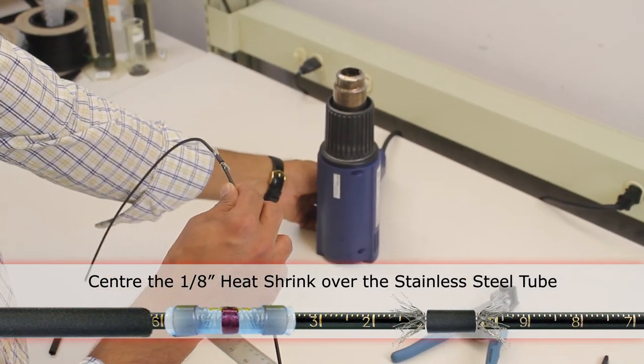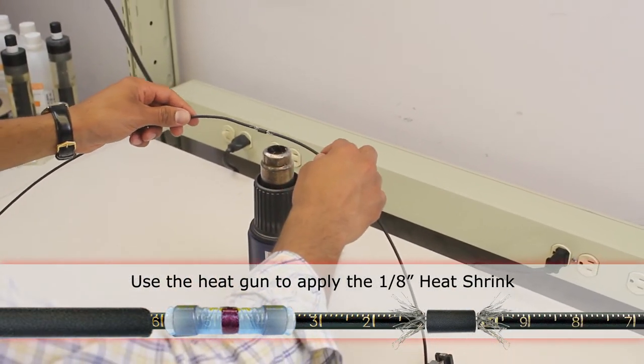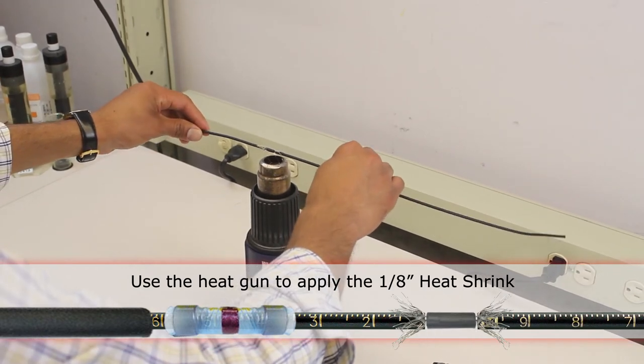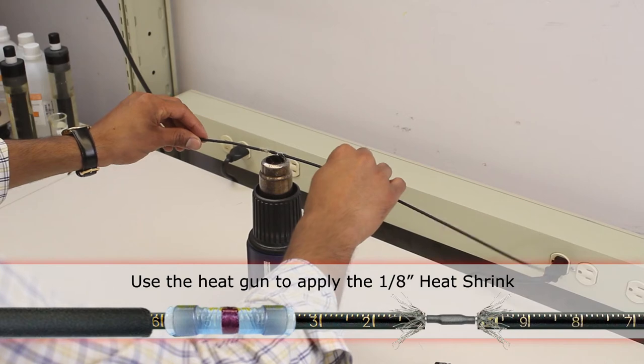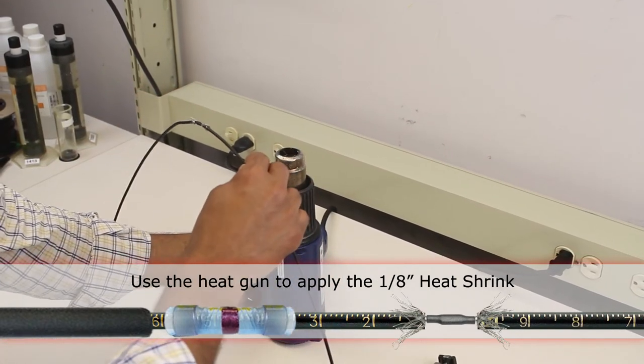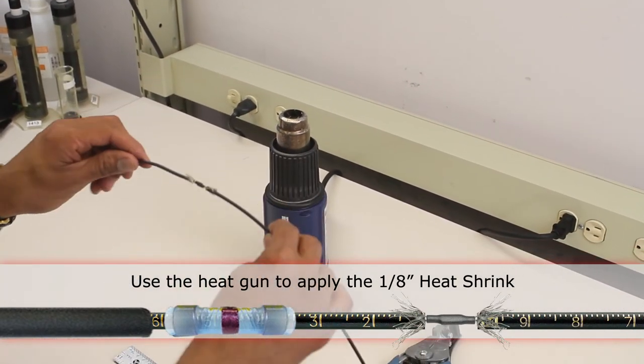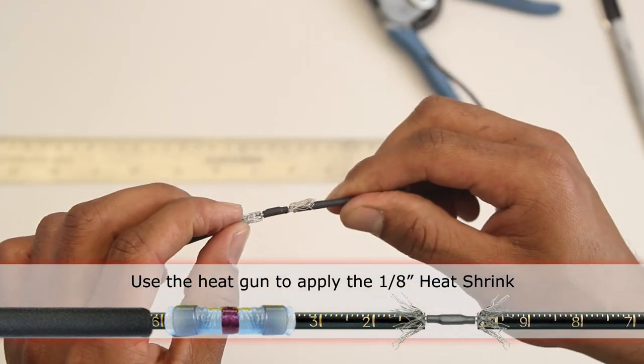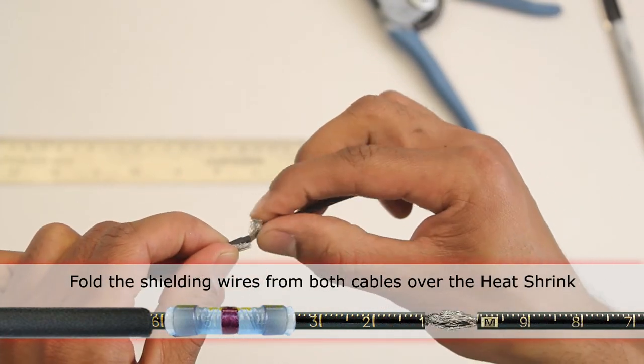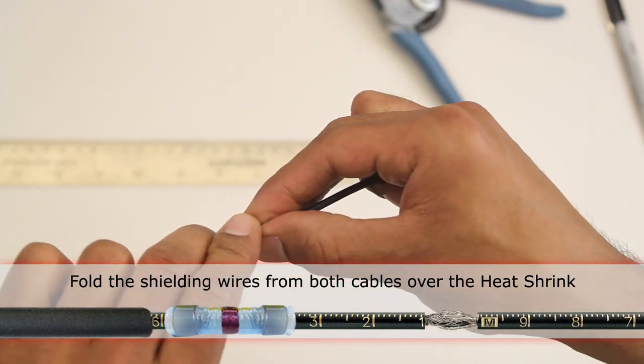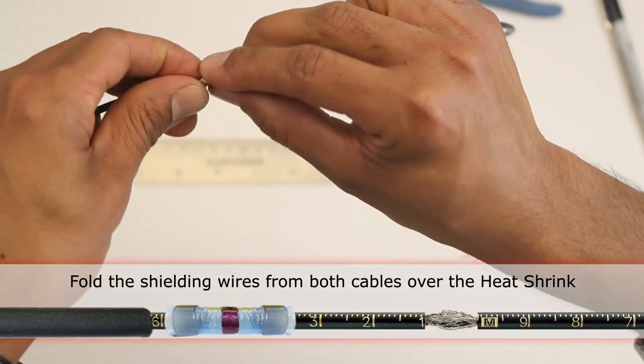With the heat gun, put the shielding wires back on top of the heat shrink so that they make contact with each end.